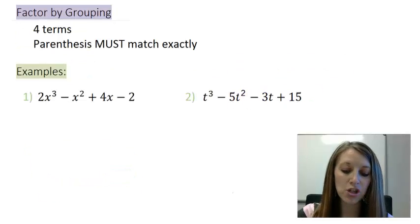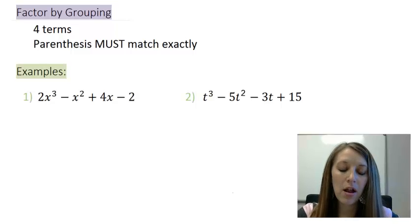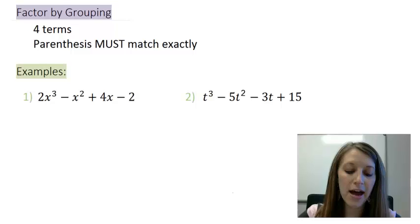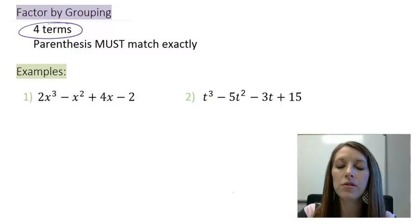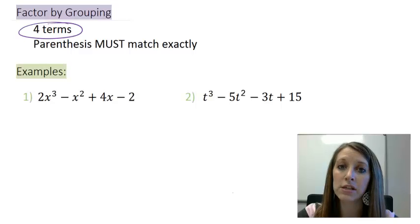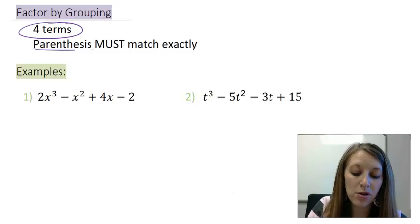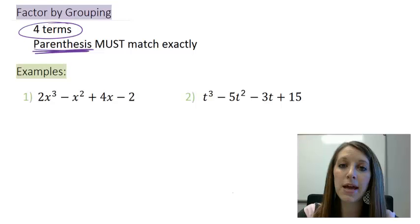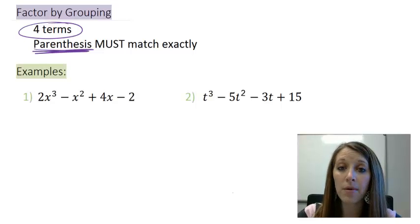Now some hints to help you out. The only way we can do factor by grouping is if our polynomial starts with four terms. If it doesn't start with four terms, factor by grouping does not apply. And just like we saw in the last examples, once we get to that step with the parentheses, those parentheses must be identical — because they are going to be a common factor, and we factor them out. If they're not identical, then we cannot use factor by grouping.